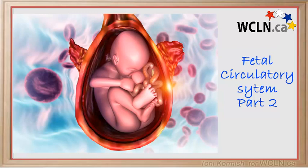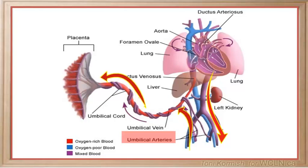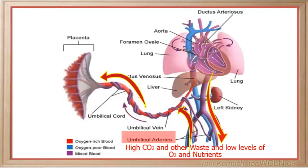The third structure unique to fetal circulation is the umbilical artery and vein. The definition of an artery is to carry blood away from the heart, so the umbilical artery carries blood away from the fetus to the placenta for nutrient, waste, and gas exchange. The umbilical artery has high levels of carbon dioxide and other waste products, and low levels of oxygen and nutrients.